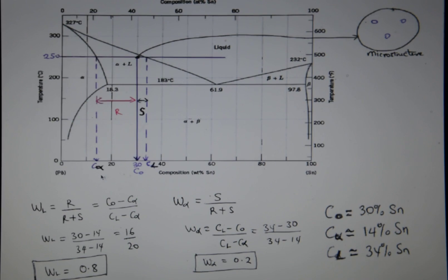Which is C naught minus C alpha and divided by R plus S, which is the whole of this part here. And that's C L minus C alpha. And the answer is approximately, it's actually 0.8.